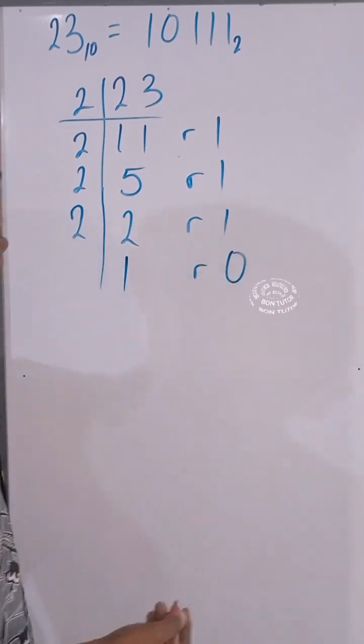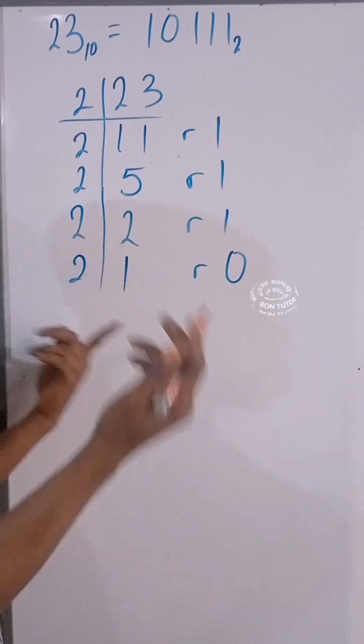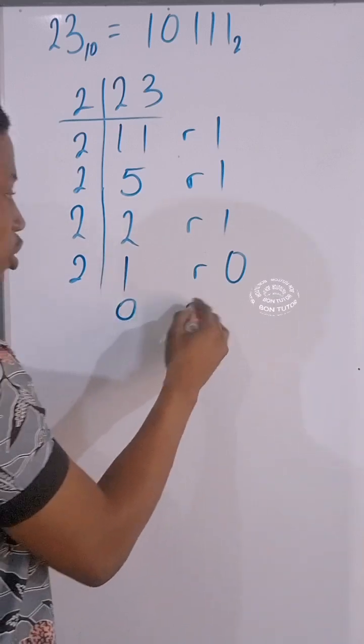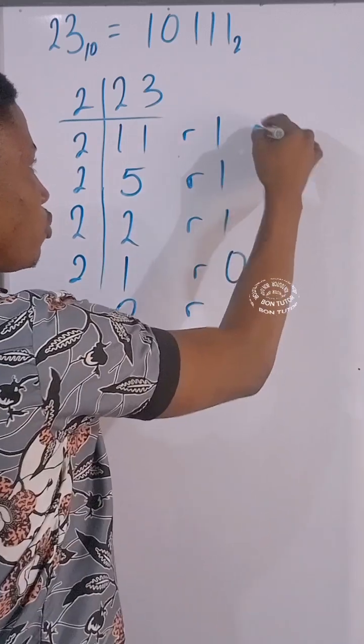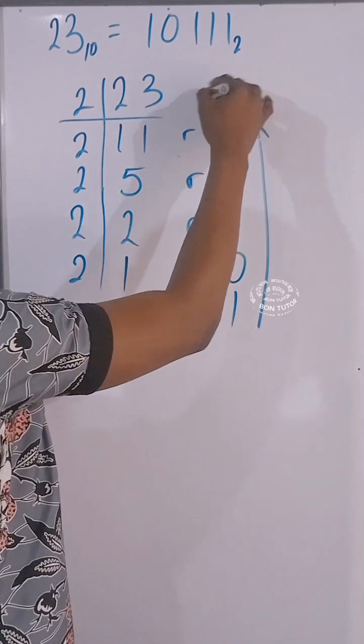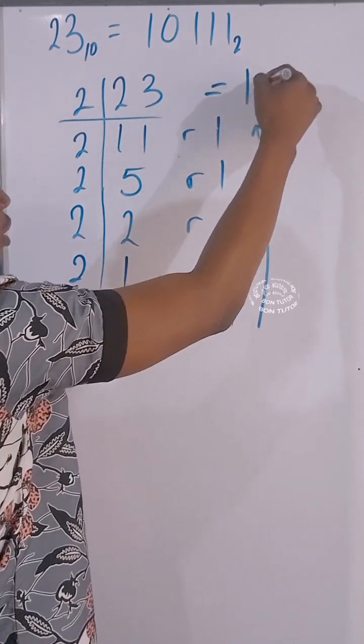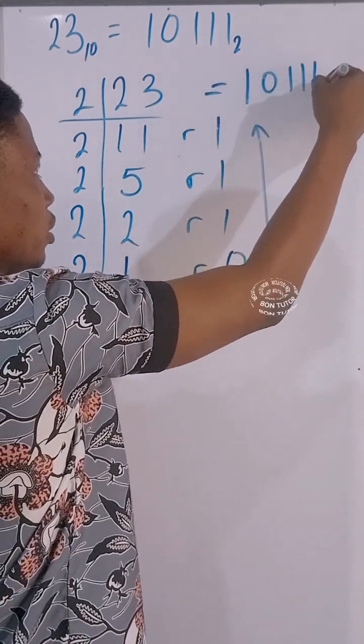Remainder 0. And 1 divided by 2, it's not possible, so you have 0 remainder 1. You pick it from the bottom to top and you have 23 to be equal to 10111 in base 2.